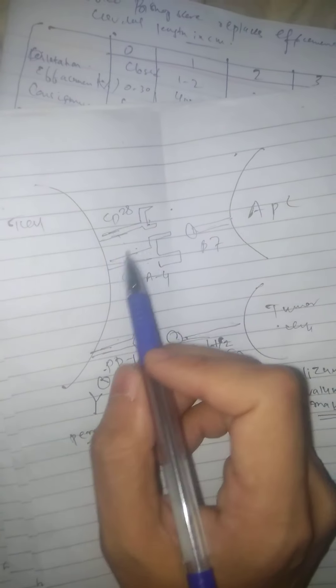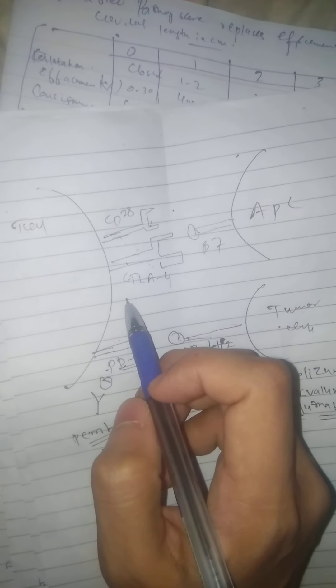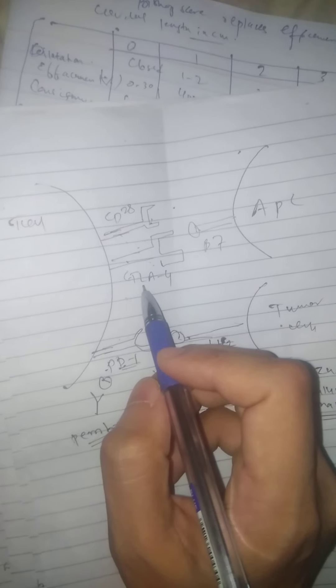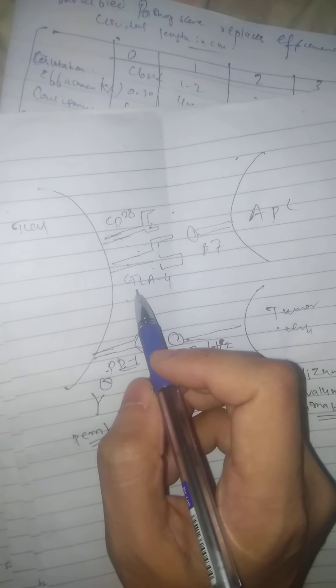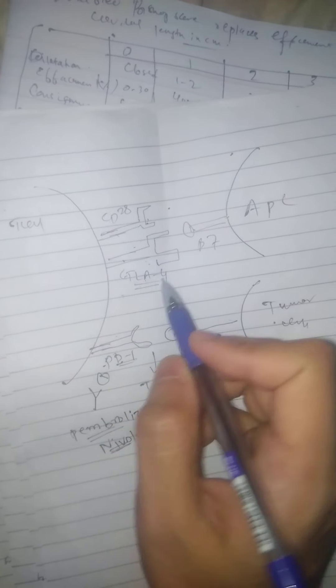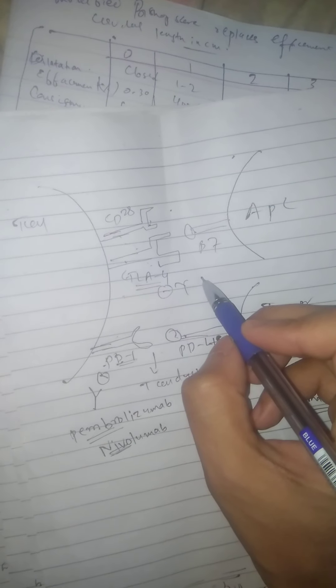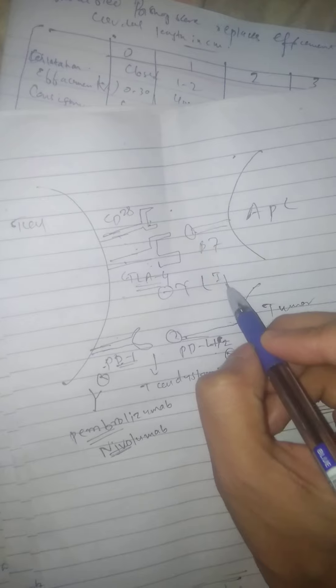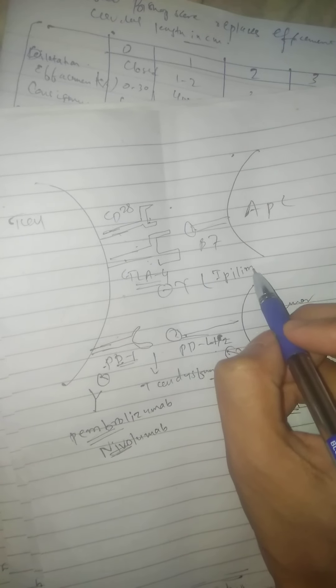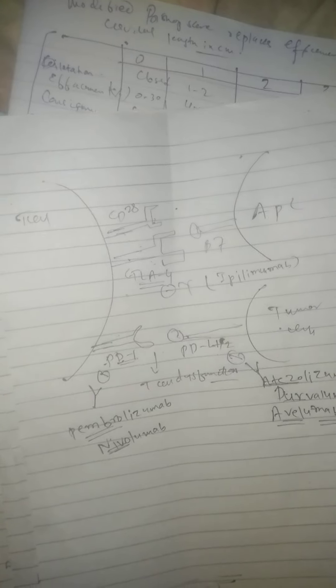Normally when CD28 interacts with B7 there is co-stimulation, but when CTLA-4 outcompetes CD28 there is a loss of co-stimulatory signals. Against CTLA-4, the inhibiting antibody is ipilimumab.